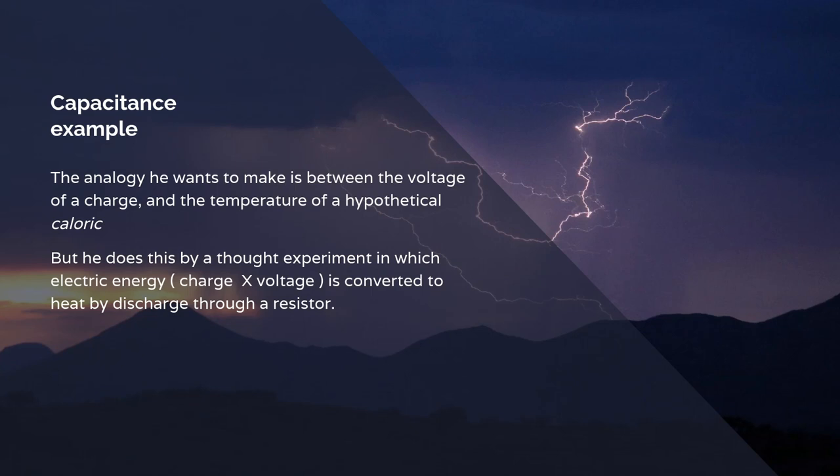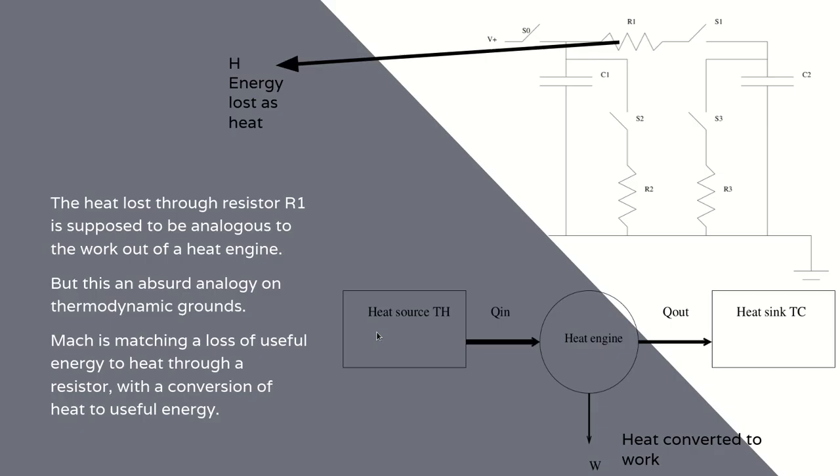The analogy he is making is between voltage of a charge and the temperature of hypothetical caloric. But he does this through an experiment in which electric energy is converted to heat by being discharged through a resistor. The heat lost through resistor R1 is supposed to be analogous to the electricity converted to heat going through R1 is supposed to be analogous to the heat that's converted into work through a heat engine like a steam engine. But this is a completely absurd analogy on thermodynamic grounds. Because Mach is matching a loss of useful energy to heat, useful electric energy, into heat with the conversion of heat into useful energy. Now, obviously energy is conserved in both cases.